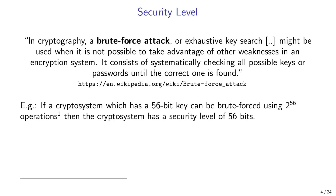Why 2^56 operations to brute force a 56-bit key? Because 2^56 is the number of permutations a 56-bit key can have. A 1-bit key has 2 values (0 or 1), a 2-bit key has 4 values, a 3-bit key has 8 values, a 4-bit key has 16, and so on. With each added bit, we double the number of possible values the key can contain.